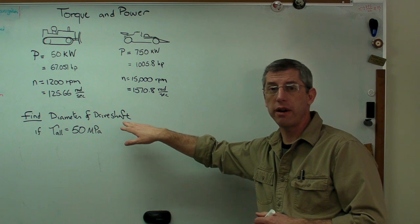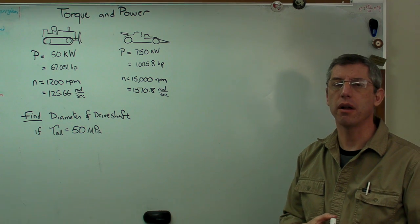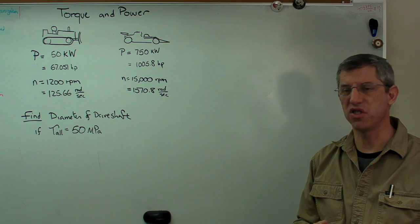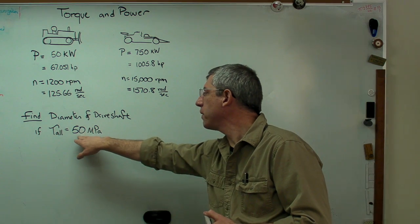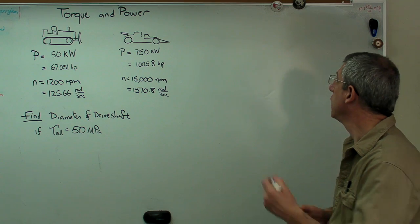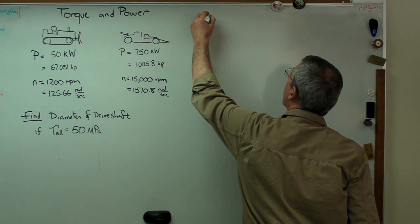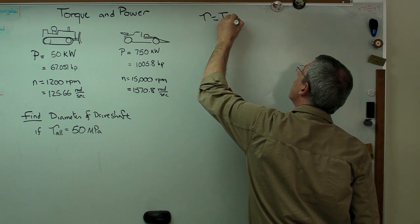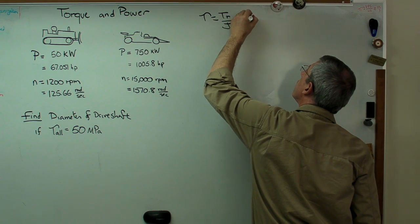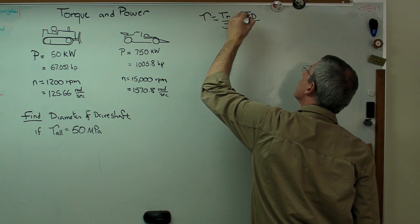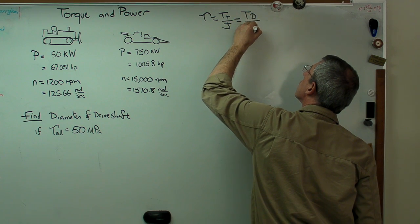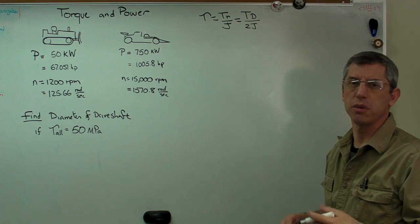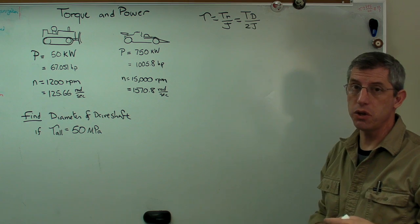We're going to design a solid drive shaft. Most drive shafts aren't solid, but to make things simple for this problem, let's assume it is. We have an allowable shear stress of 50 megapascals. The governing expression we've got is that tau equals TR over J. For a solid shaft, let's write this in terms of diameter: tau equals TD over 2J.